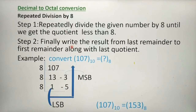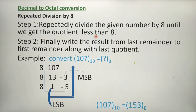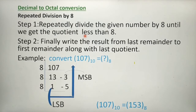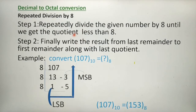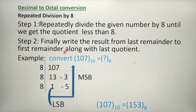Here we have two steps. First step: repeatedly divide the given number by 8 until we get a quotient less than 8. When the quotient is less than 8, we can stop the process. Then we write the result from the last remainder to the first remainder, along with the last quotient value.